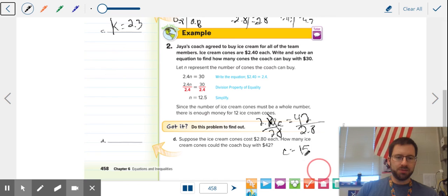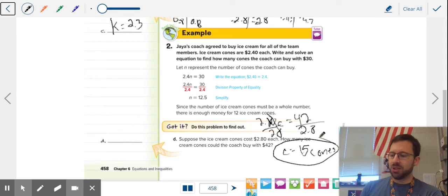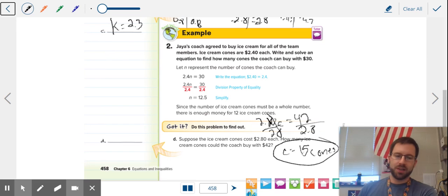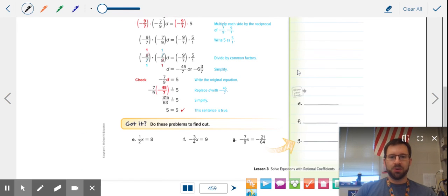15 cones. Let's go, coach. Buy the whole team. Now, remember, this is a word problem. So anytime you have a word problem, you need to have a label in your answer. 15 cones. I'm going to take a second. I'm going to do my double check. 2.8 times 15 is 42. Ba-bam. The check works. It always works.